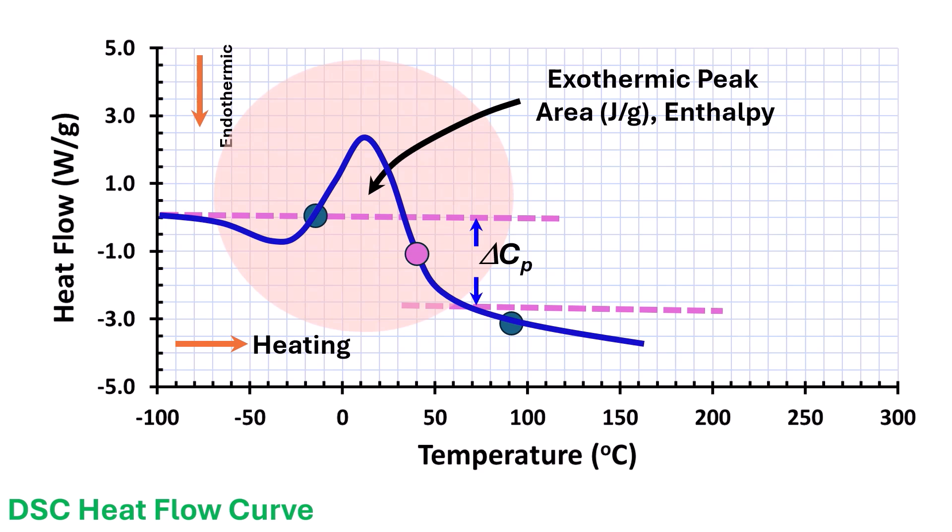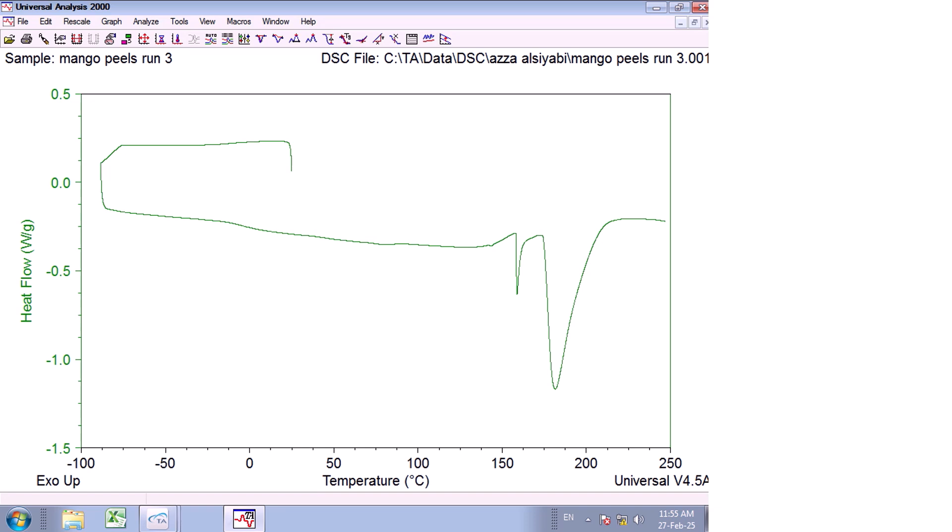However, sample structure and molecular characteristics could be changed after the first scan and sample may not be the same as original sample. In many instances, glass transition is difficult to trace while a sharp and deep endothermic peak is observed. In this case, rescaling is required to visualize the glass transition. I am going to show this in the next slide.